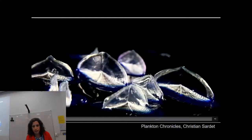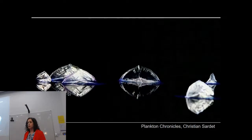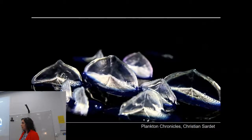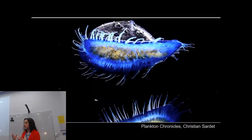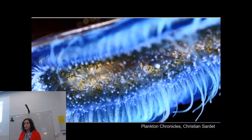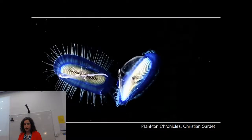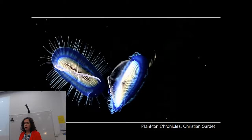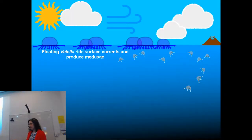Valella have tentacles they use to feed and primarily prey on slow-moving organisms. They eat a lot of fish eggs — when we think about the connectivity of the neuston ecosystem to the broader ocean, we think about Valella in terms of its relations to fish eggs. Often fish eggs are extremely buoyant and pop to the surface, and Valella catches and eats them.